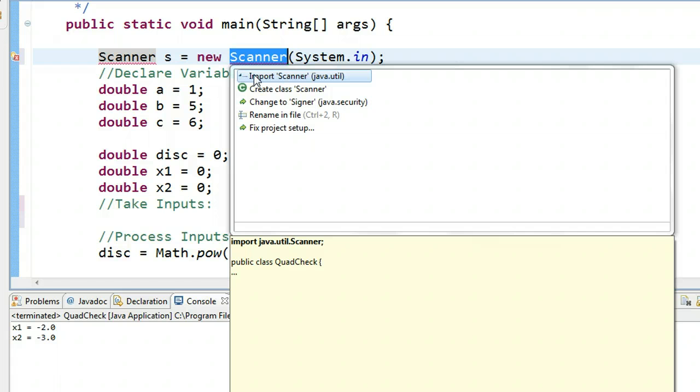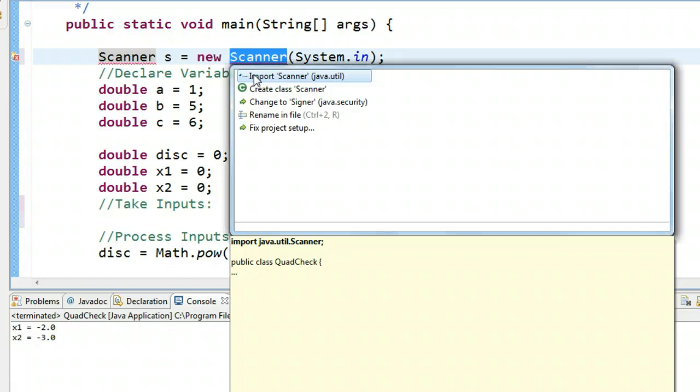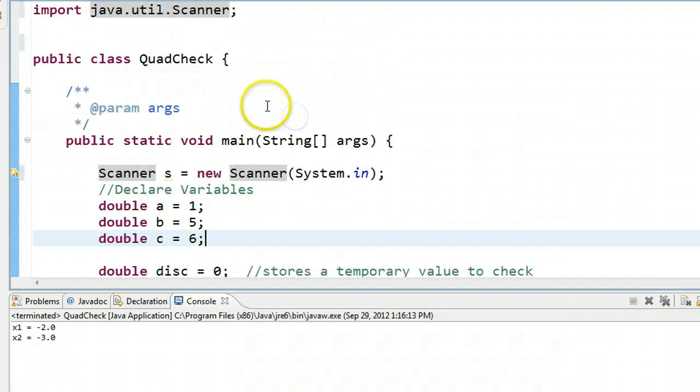But if you need a special tool, you have to almost tell the program to go and get it. And that's what this import statement is doing. So if I double click, it grabs it. And if I scroll up, there it is.